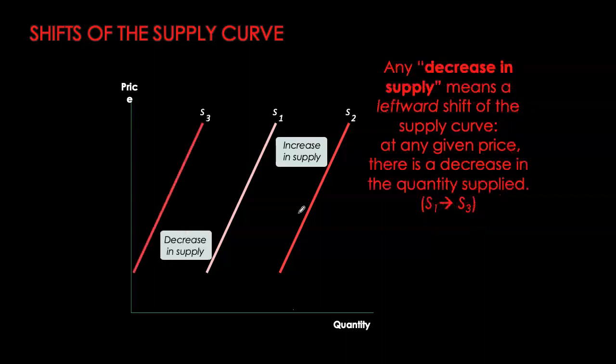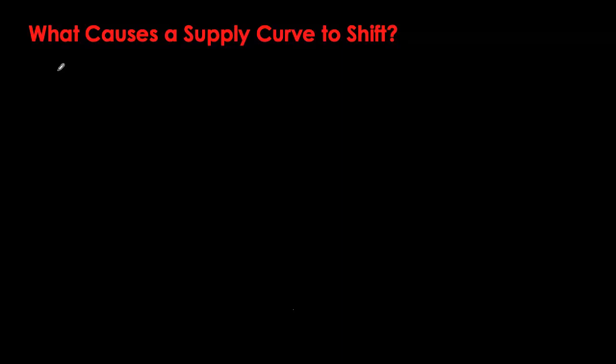A quick reminder: an increase in supply is always a shift to the right, when at any given price quantity supplied is higher. A decrease in supply is always a shift to the left, when at any given price quantity supplied is lower than before.